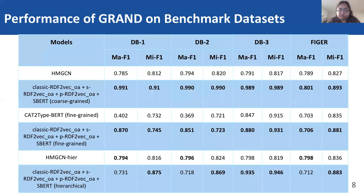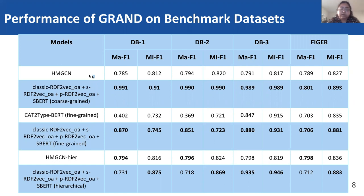The results show that GRAND considerably outperforms the baseline models. We evaluated GRAND in three different settings: coarse-grained, fine-grained, and hierarchical. There are many existing baseline models on entity typing and our proposed model has been compared with all of them in the paper; here we have put the best performing model for each category. For coarse-grained, we have HMGCN, which uses a GCN model and uses categories, properties, and keywords from textual entity descriptions. Our proposed model with all the combination of vectors, where OA represents the ordered vectors, outperforms this baseline model.